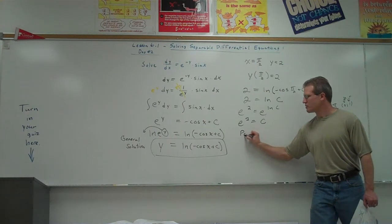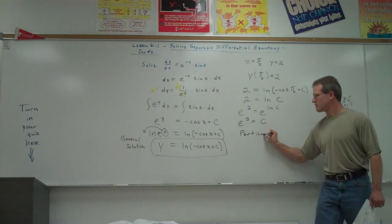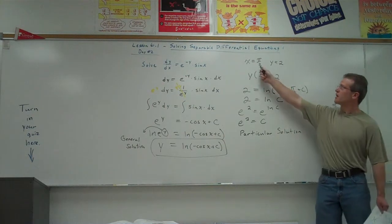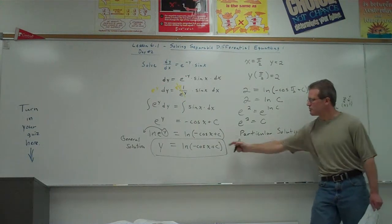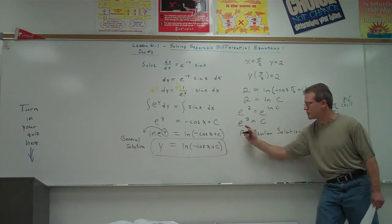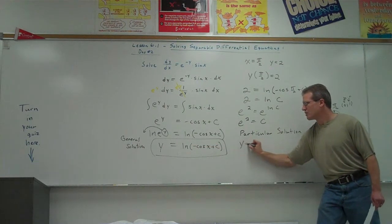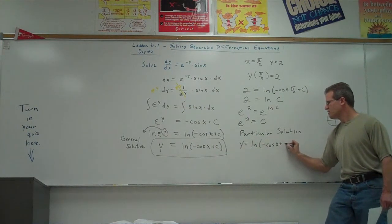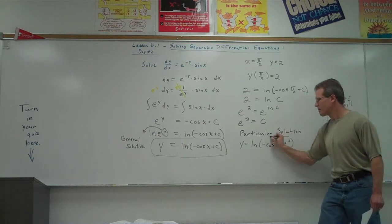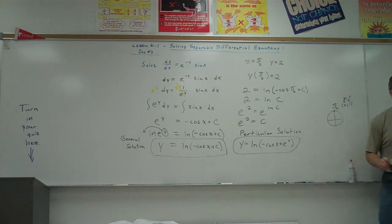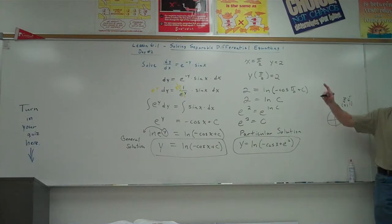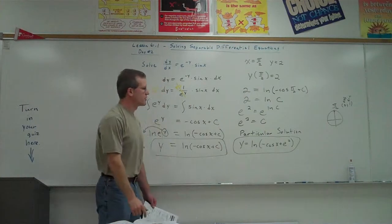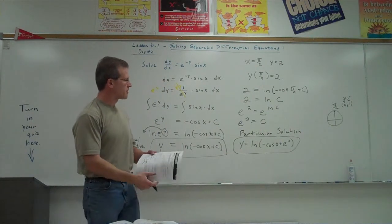So now we have what's called, not our general solution, but now it's called our particular solution. Because now we're getting one specific curve that goes through the point pi halves 2. And that solution's going to be, I'm just going to copy this down, but instead of a c here, I'm going to put e squared. y equals natural log of negative cosine of x plus e squared. That's called a particular solution to that differential equation. So we started with a derivative equation, and we came up with the original function. Any questions about that?